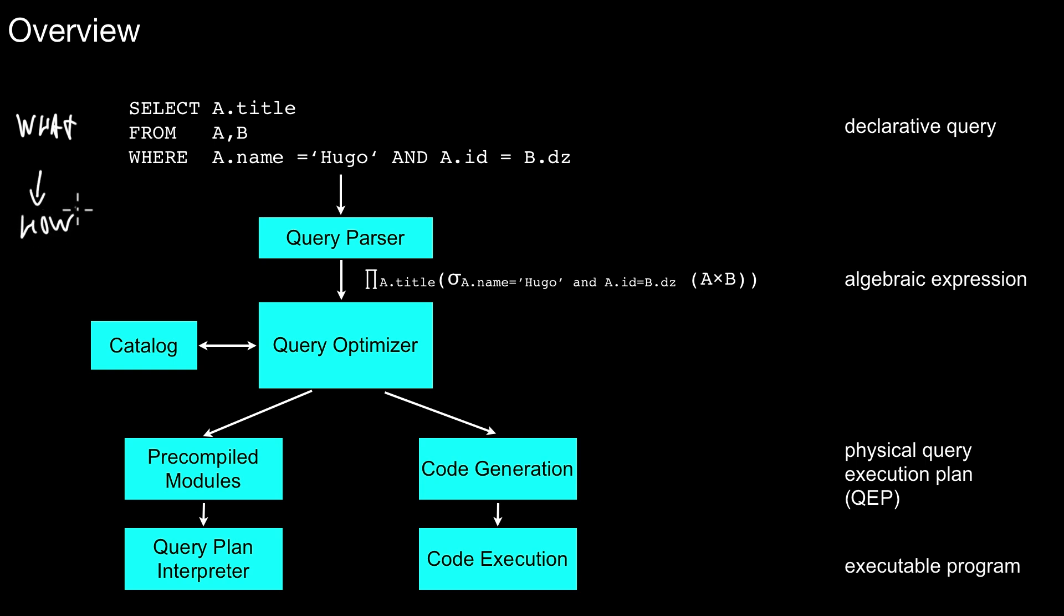Overall the big picture is the query optimizer has to translate this what into a how. And how on the computer means you come up with an executable program in the end. So basically the query optimizer looks at this declarative query and translates this into an executable program. It produces some code that can then be executed by the database system. And that happens in multiple steps.